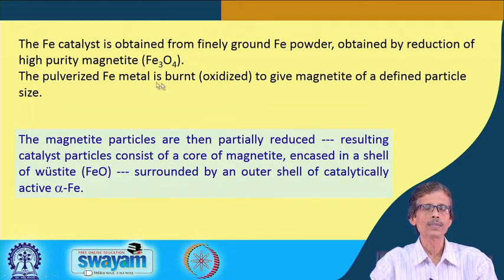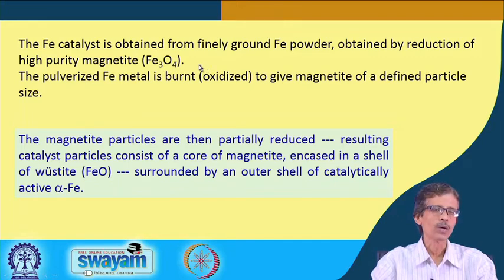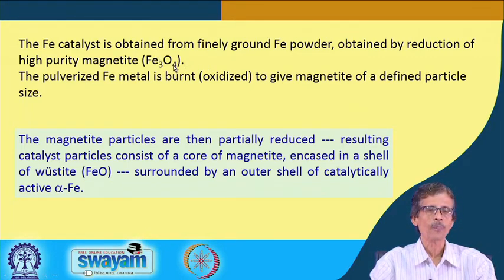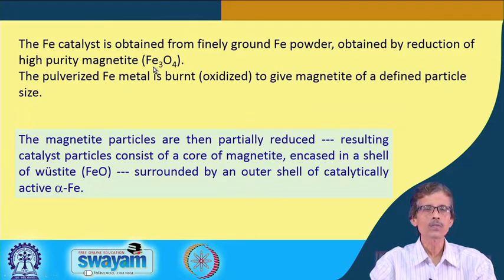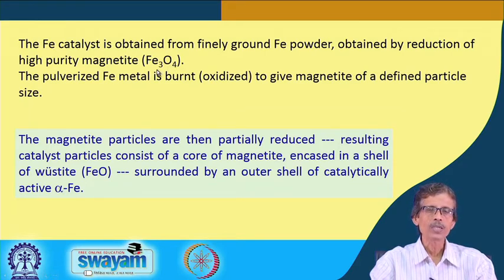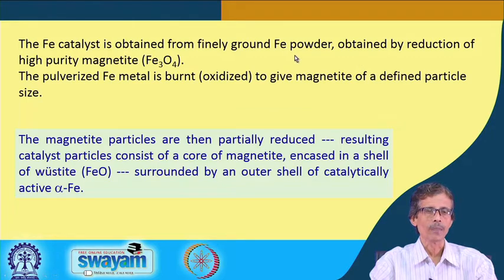Magnetite is a typical ore of iron. Hematite is Fe₂O₃ and magnetite is Fe₃O₄. These are spinel-type oxides of iron, which can be useful for the production of iron powder.